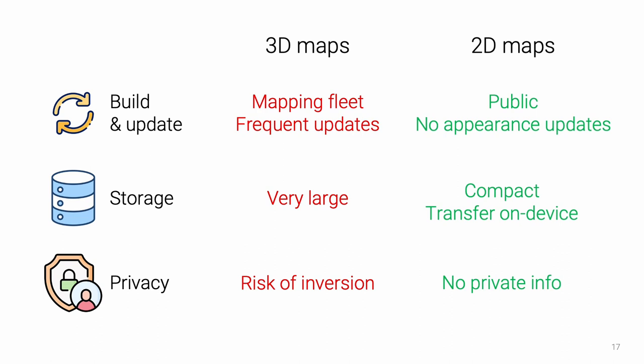OrientInternet learns to mimic this behavior and can localize in the very same maps that humans use. Using 2D maps has multiple benefits over 3D maps. Thanks to OpenStreetMap, OrientInternet enables anyone to localize anywhere for free. Because these maps include the semantics of the world but not its appearance, they don't require frequent updates. 2D vector maps are extremely compact and easy to download, which enables on-device localization within large areas and only stores public information.